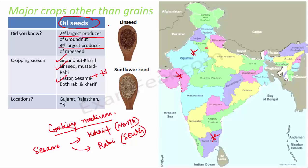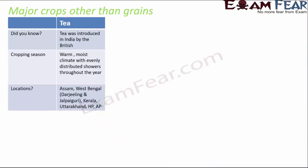Tea is a very interesting crop. An interesting fact is that tea was introduced to India by the British, yet today India is the second largest producer of tea in the world — making it hard to believe. The largest producer of tea in the world is China.